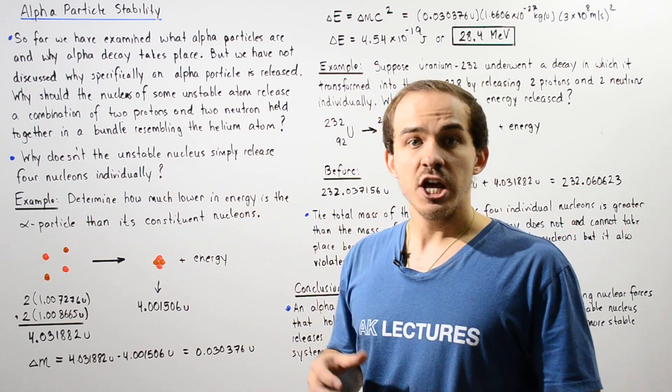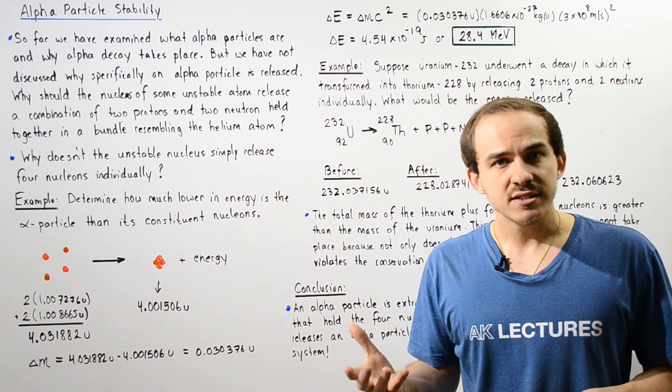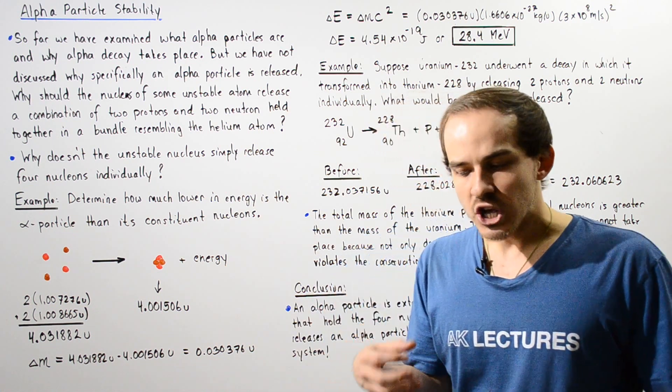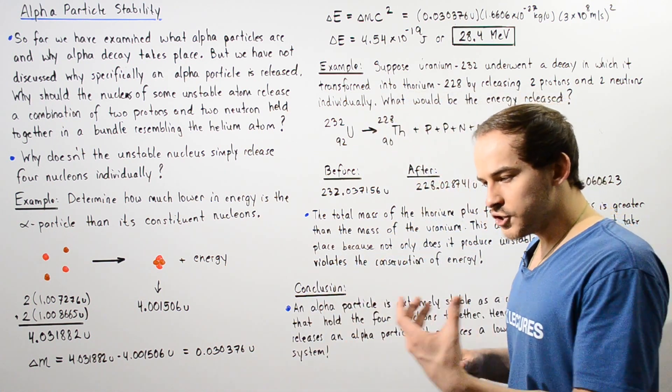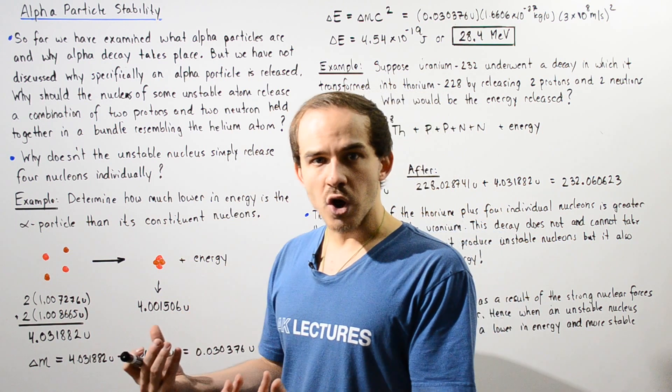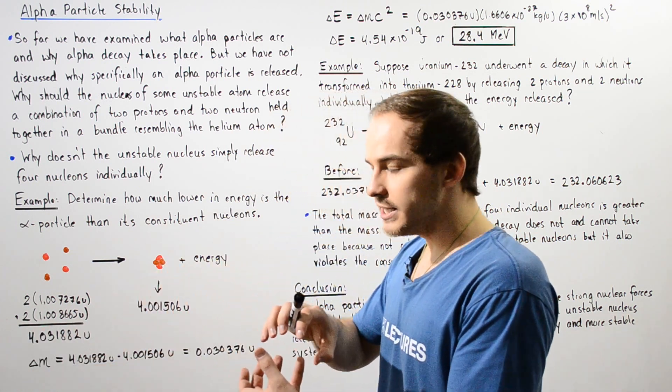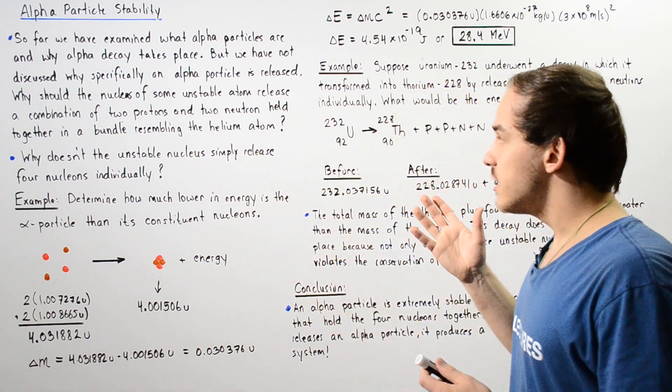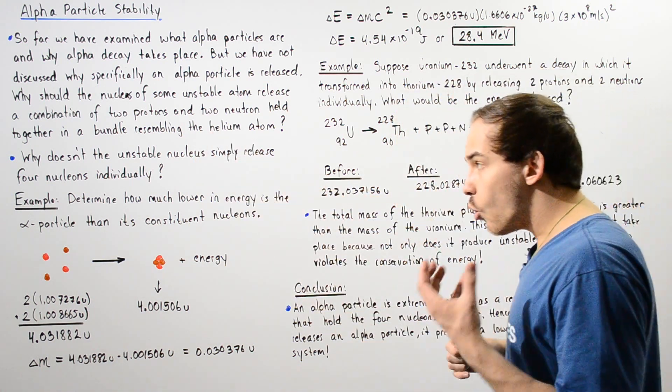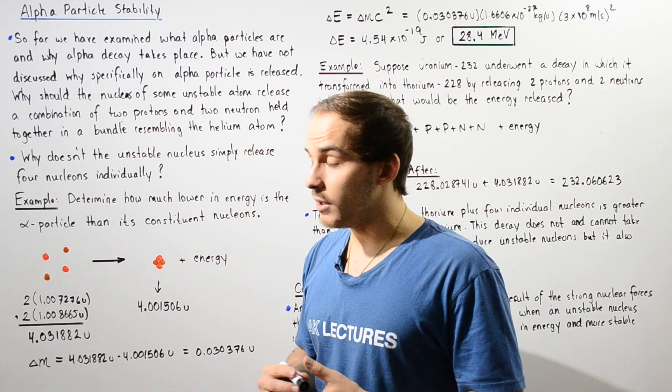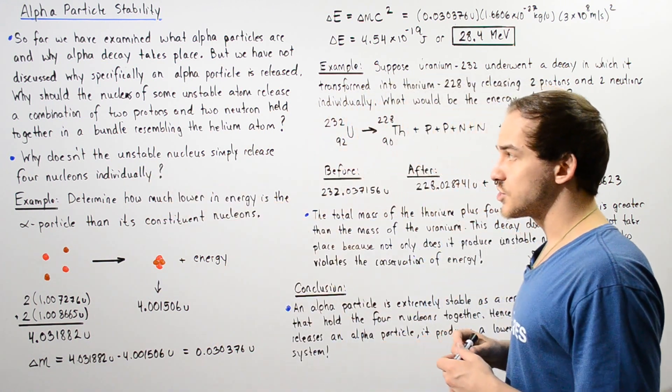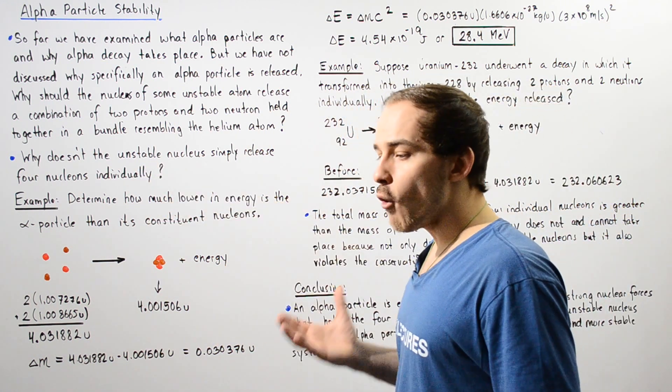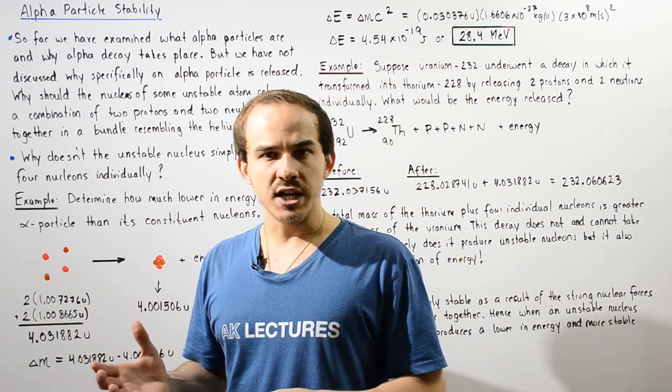So why should the nucleus of some unstable atom release this combination of two protons and two neutrons that are held together in a bundle that we call the alpha particle that resembles the helium atom? So why doesn't, for example, the unstable nucleus simply release four individual nucleons?